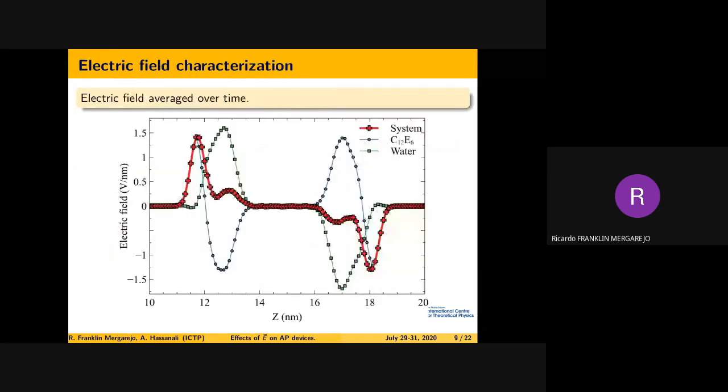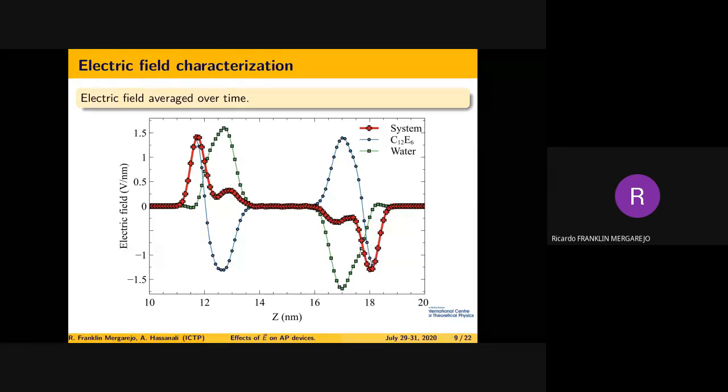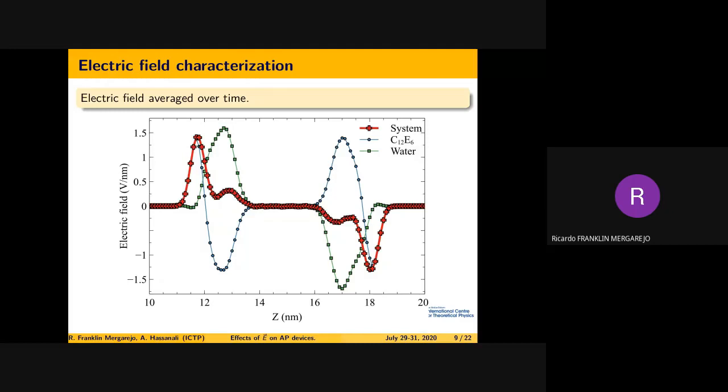We compute the electric field along the z coordinate averaged over time. This is a static way to see the electric field. We have a net electric field that is pulling toward the bulk, but you also have the flipping—the competition or contrasting effect between water and surfactant. Sometimes the surfactant tends to decay the effect of the water. But again, this is a static picture; this is a very fluctuating system.